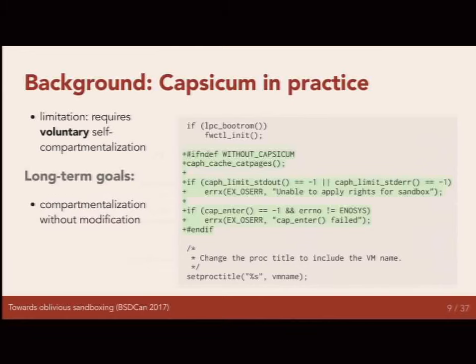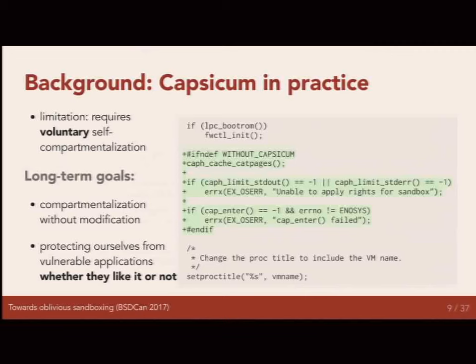Our long-term goals — what we really want to do — as part of our larger research agenda and practical open-source agenda, is that we want to have compartmentalization without modifying applications. Take existing applications, break them up into little chunks, and have them run in independent, mutually distrustful sandboxes without actually changing the applications at all. A first step toward that is just sandboxing: take a whole application and drop it in a sandbox and let it run without having to modify it.